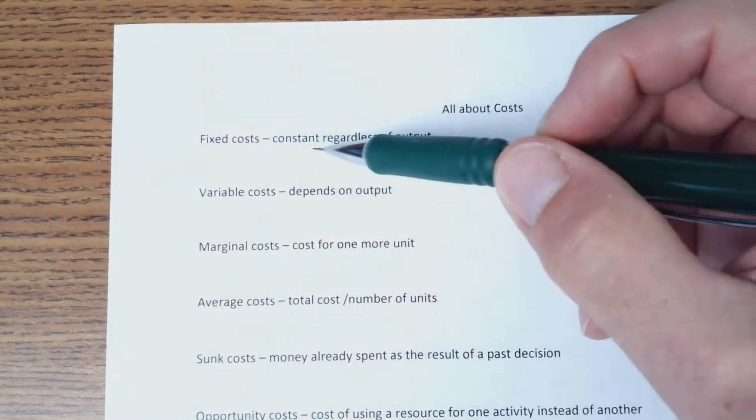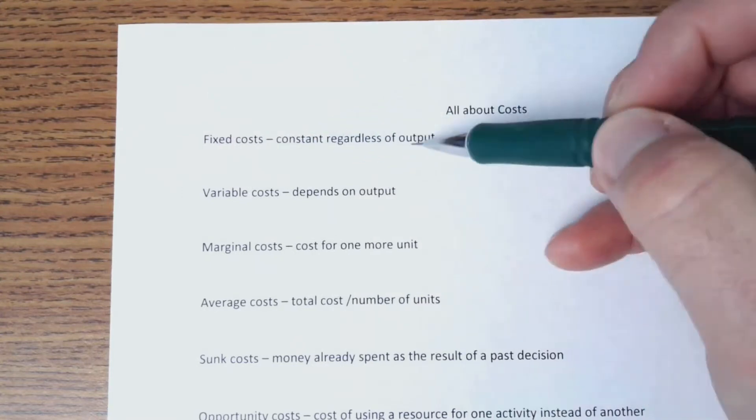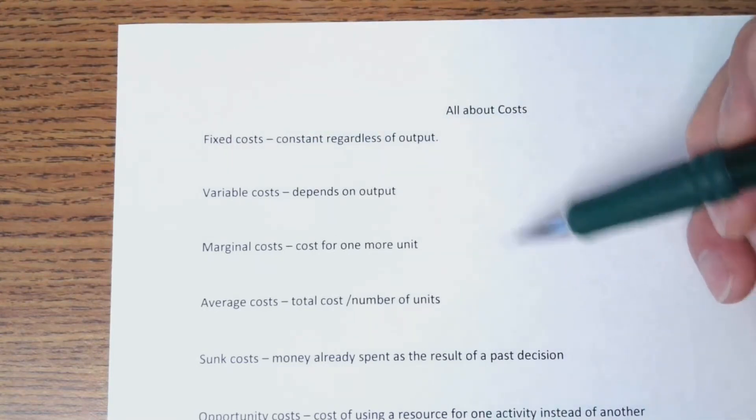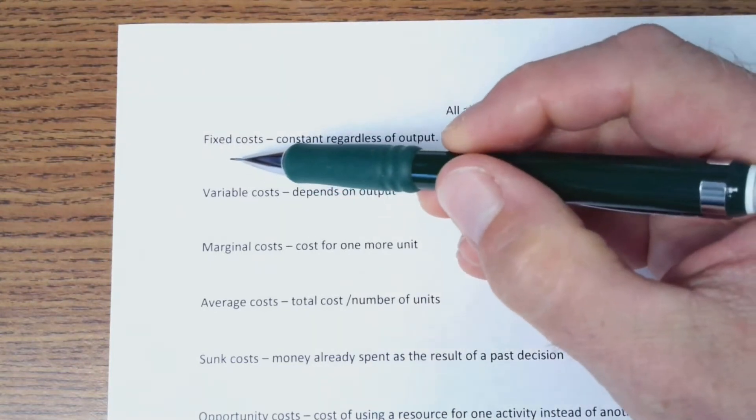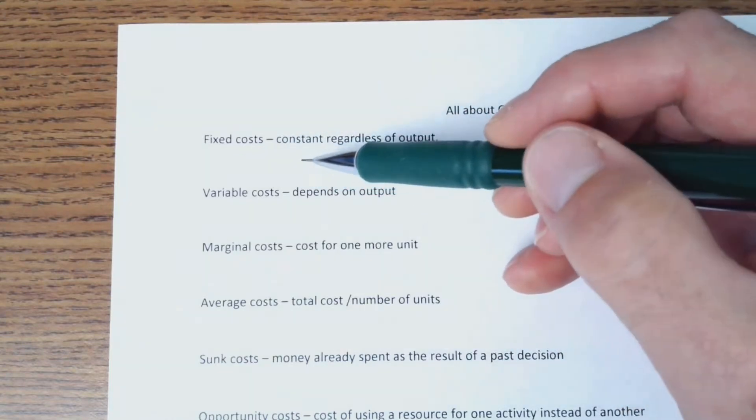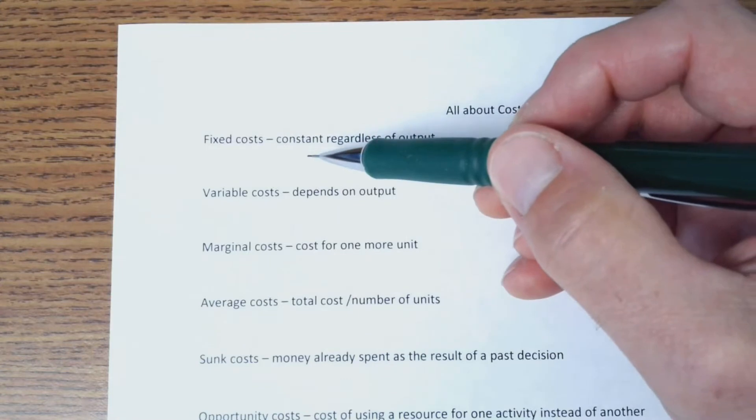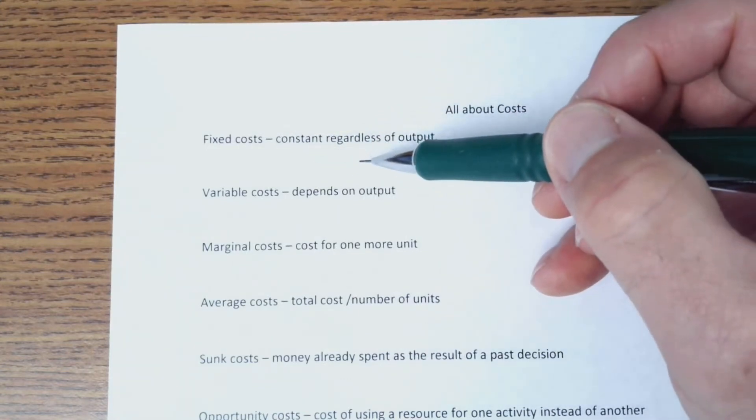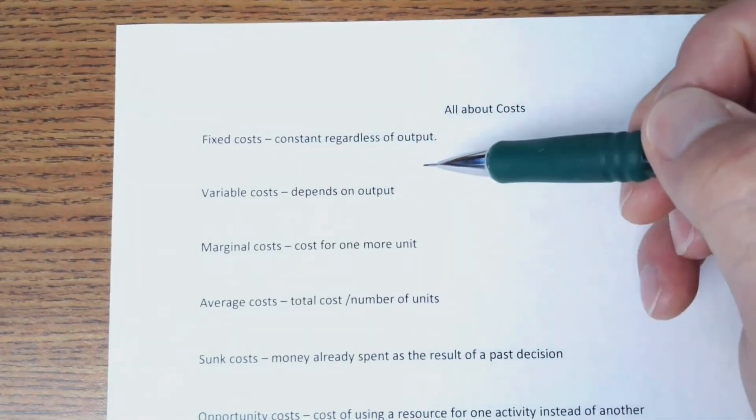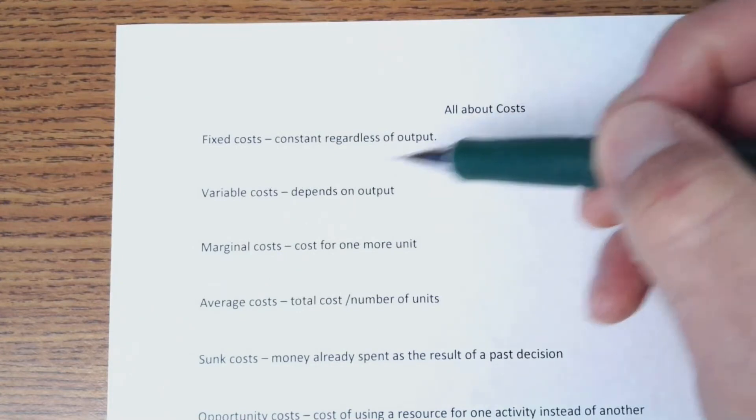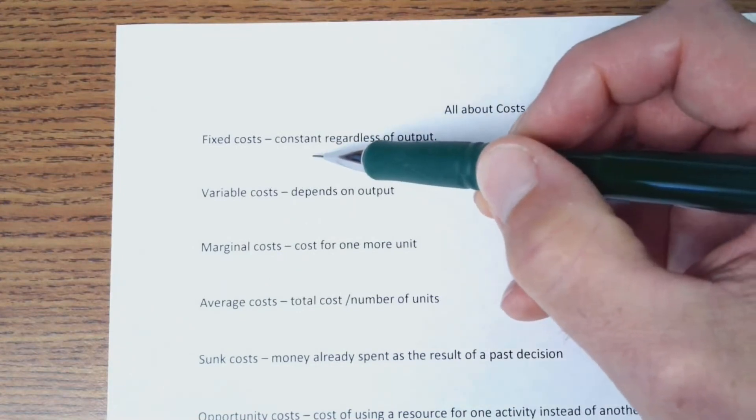So first, let's talk about fixed costs, which are constant regardless of output. For example, if you're setting up a business, you have to buy a building, and then you have to pay taxes on that insurance. You have to buy machinery. So these are costs that can be planned on and budgeted for.